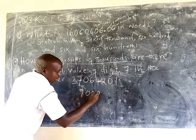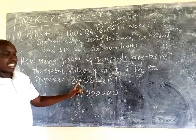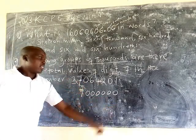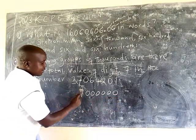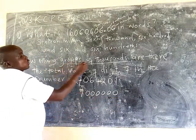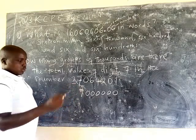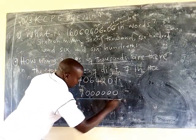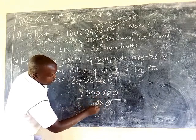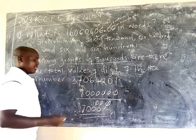So it is 7 — 1, 2, 3, 4, 5, 6 — so it is 7 million. That is the total value. The place value of 7 is million, but the total value is the digit times the place value: 7 times one million is 7 million. But we are asked to find groups of thousands. So we take the total value and divide by one thousand to get the groups. 7 million divided by 1,000 — we get 7,000 groups.